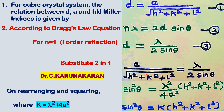The rearranged equation gives sin²θ = (λ²/4a²)(h² + k² + l²). In the powder XRD diffraction method, monochromatic X-ray wavelength is used. For a cubic crystal system, since 'a' is constant, we define K = λ²/4a², so that sin²θ = K(h² + k² + l²).